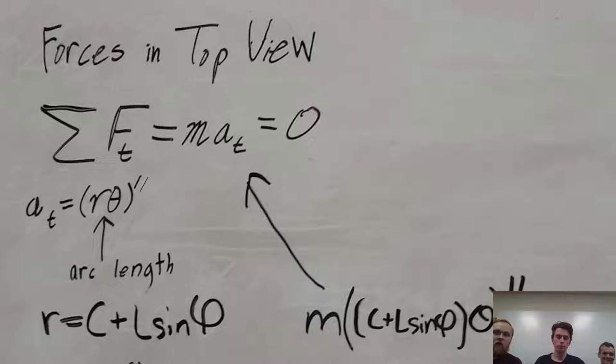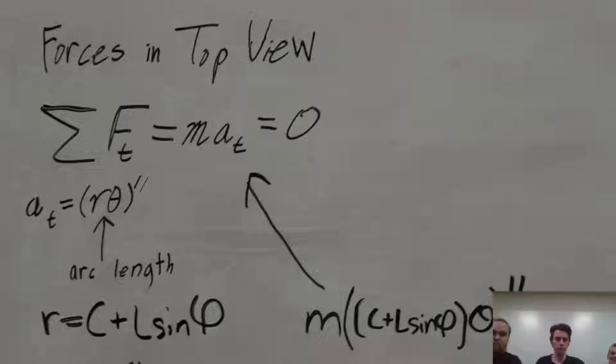So here we see the forces in the top view, or forces in the top plane. There is nothing pushing or pulling drag on the arm while it is swinging, because again, we're assuming that there is no drag. Therefore, the sum of the forces acting on the arm in the top plane is zero, effectively. And the mass times the second derivative of arc length is also zero. We substitute our equation for r to get our final equations.